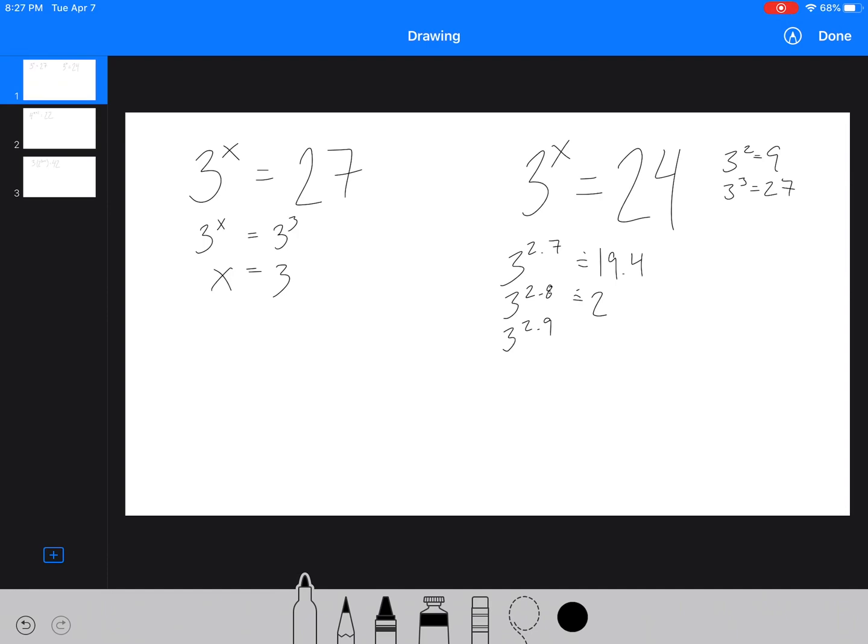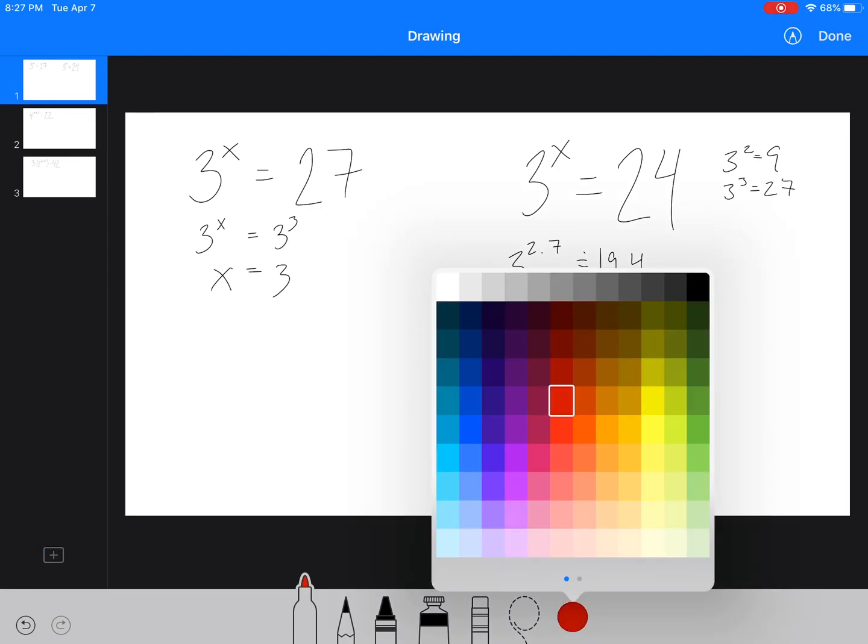3 to the 2.8 is equal to approximately 21.7, and 3 to the 2.9 is equal to approximately 24.2. So in this case, we'd have to go through and do this a whole bunch of times. We'd actually say that this is the closest, so we'd say x is approximately equal to 2.9.